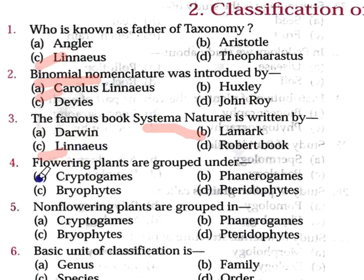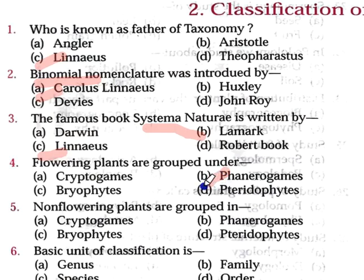Question number 4: Flowering plants are grouped under — Option A: Cryptogames, Option B: Phanerogames, Option C: Bryophyta, Option D: Pteridophyta. The correct answer is Option B: Phanerogames. Angiosperms — seed-bearing plants — produce flowers, and we call them Phanerogames. So flower-producing plants belong to Phanerogames.